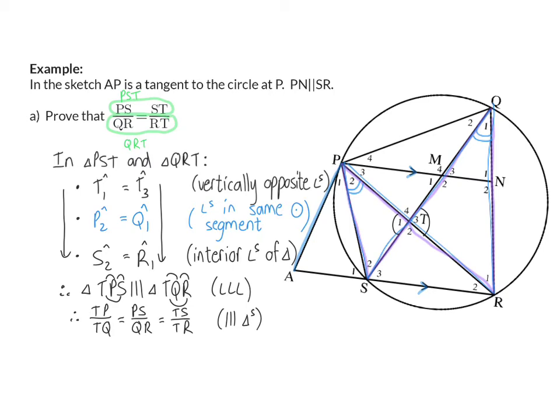I have PS and QR, and I have TS or ST and TR. So my final step is to write down the two correct parts of that proportion, and then I've proven what they've asked.